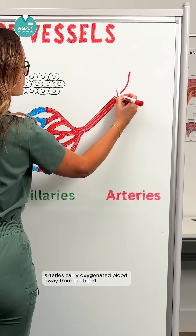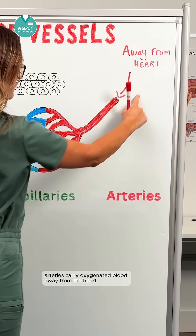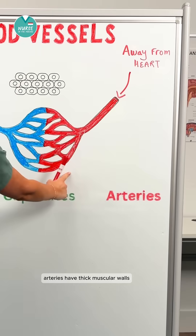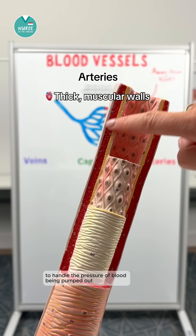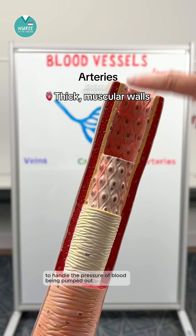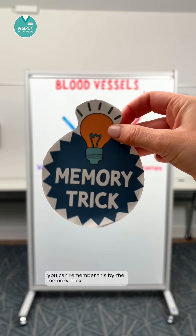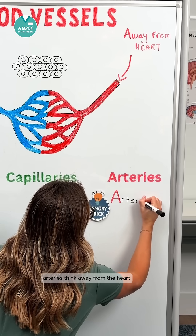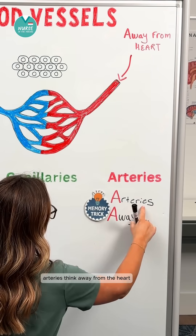Arteries carry oxygenated blood away from the heart. Arteries have thick muscular walls to handle the pressure of blood being pumped out. You can remember this by the memory trick: arteries — think 'away from the heart.'